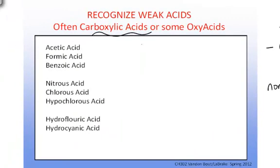So, some common names of carboxylic acids: acetic acid, formic acid, benzoic acid, they all have the carboxylic acid functional group. Some common names of oxy acids: nitrous, chlorous, hypochlorous acid, they'll have the non-metal...